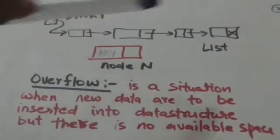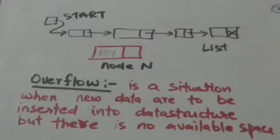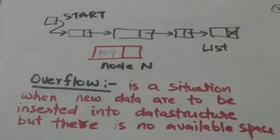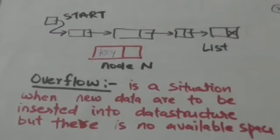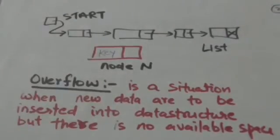Suppose there is a linked list called 'list' and 'start' is its list pointer variable. Now we have to insert a node N into the linked list. Suppose the information at node N is 'key'. First, it is checked if free space is available to accommodate node N or not, by checking whether the free storage list is empty or not.